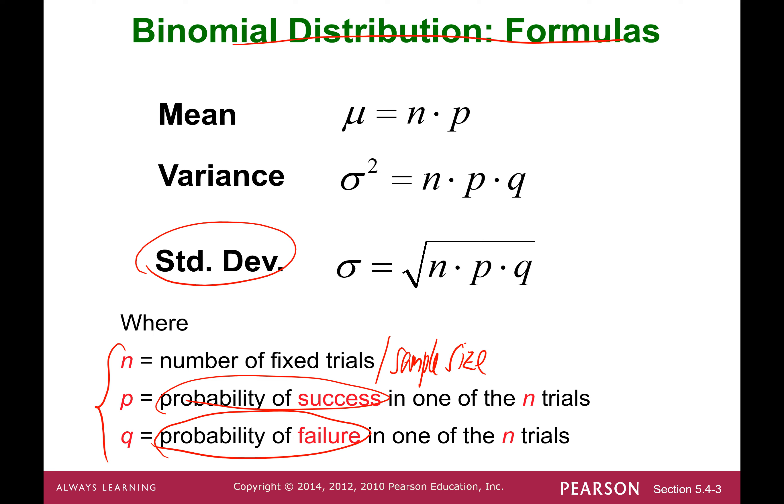One more time to keep note of those three important symbols: n, the number of fixed trials or sample size; p, probability of success; and q, probability of failure.